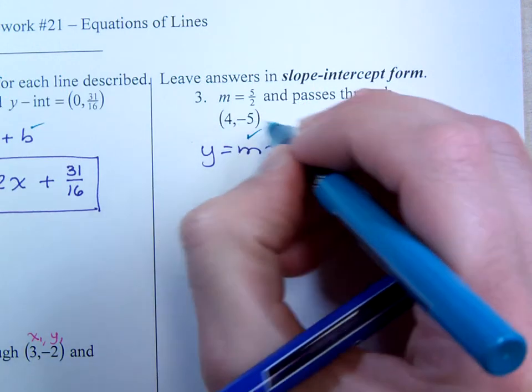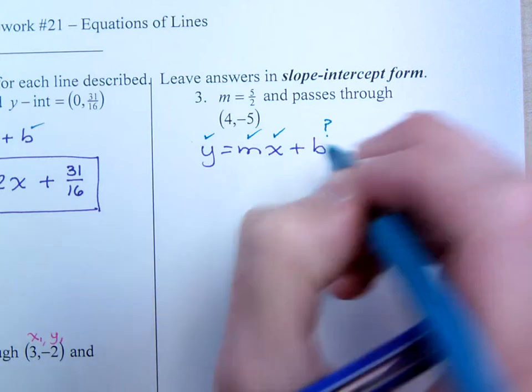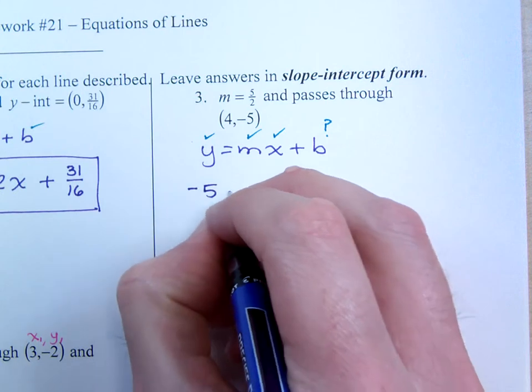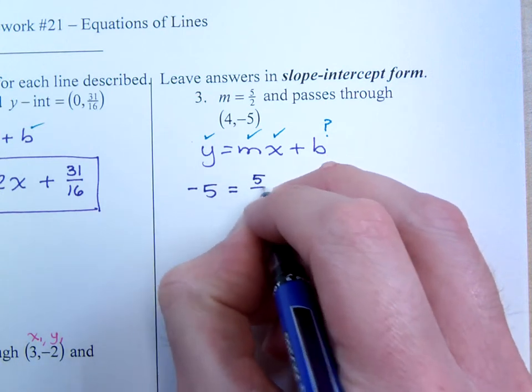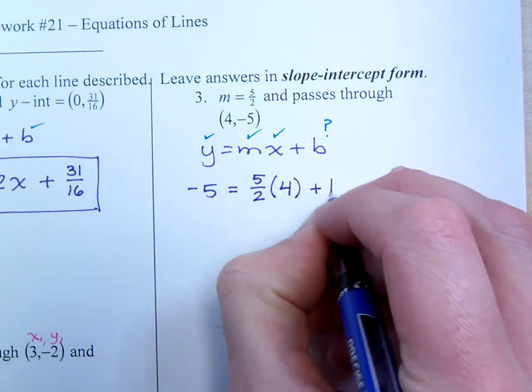But that's okay, because I have an ordered pair here. I have x and y, so I can plug that in, and the only thing I won't know is b. So, the y is negative 5. Your slope is positive 5 halves. Your x is 4, and b is what we are going to find.